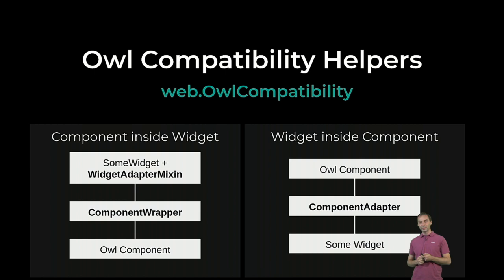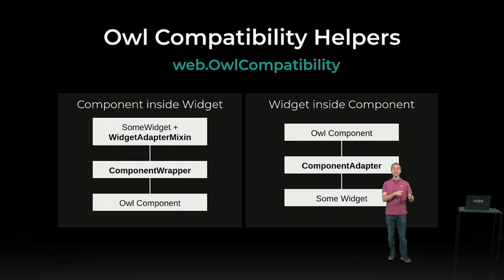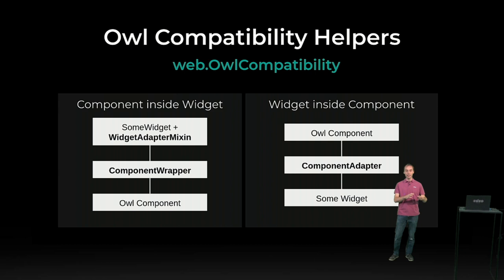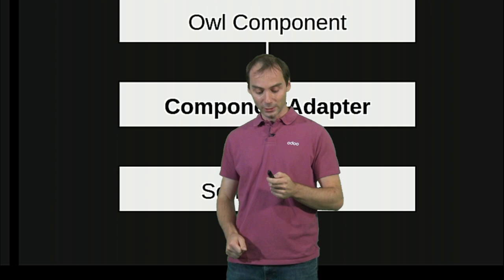I invite you to read the source code for this compatibility file — it contains a lot of additional information on how these helpers should be used. For component inside widget, add the widget adapter mixin to the parent widget, then instantiate a component wrapper rather than your component directly. This is a higher-order component that handles all translation and won't appear in the actual DOM. For widget inside component, use the component adapter and configure it to instantiate your widget.